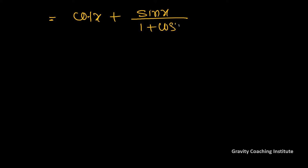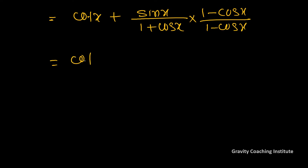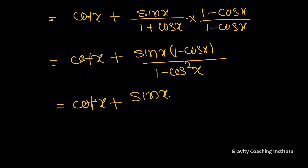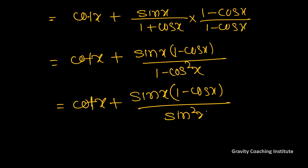So this equals cos x upon sin x plus sin x upon (1 + cos x). Multiply through by (1 minus cos x) upon (1 minus cos x) to simplify. This gives cos x plus sin x into cos x upon (1 minus cos x).